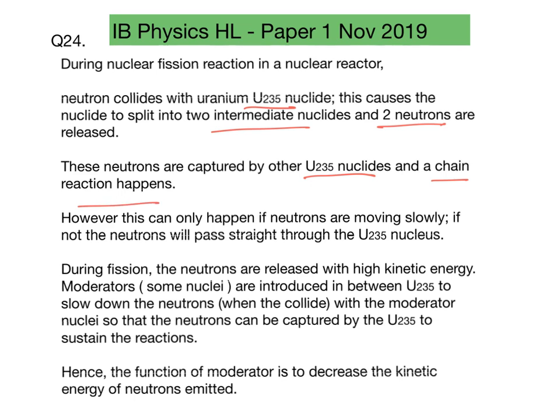However, you need to note that these neutrons can be captured only if they are moving relatively slowly. If not, they will just pass straight through the U-235 nuclides.